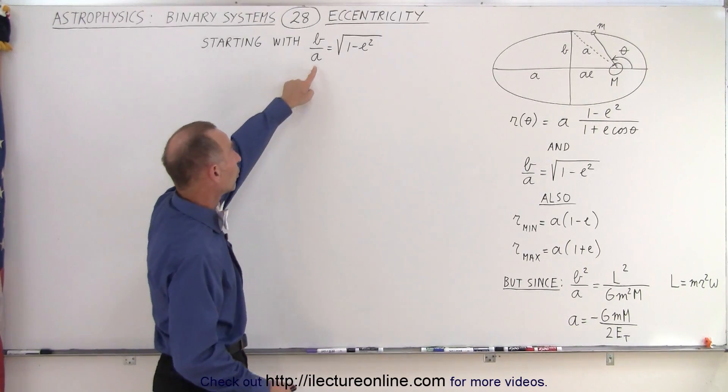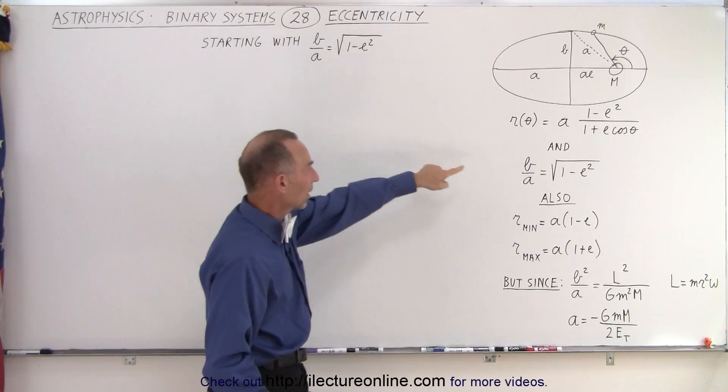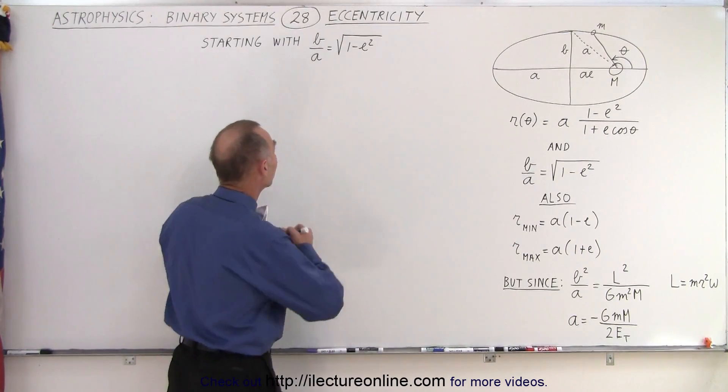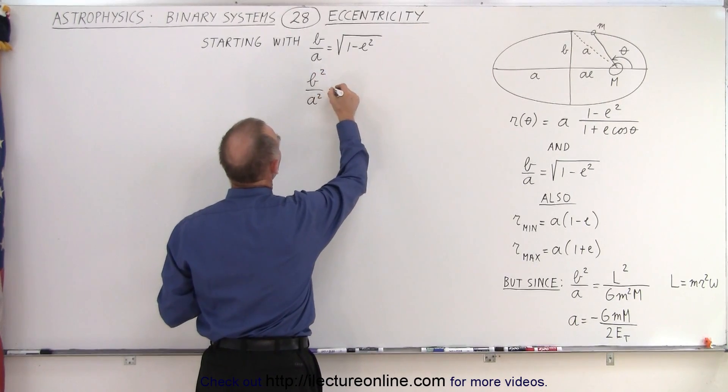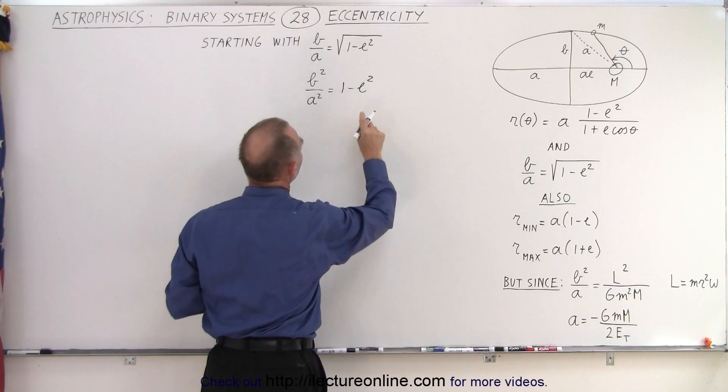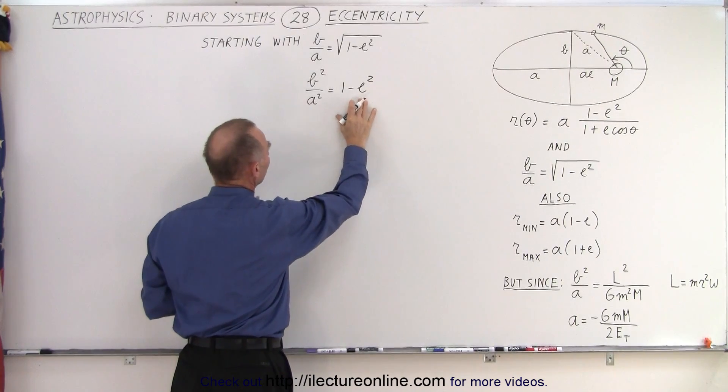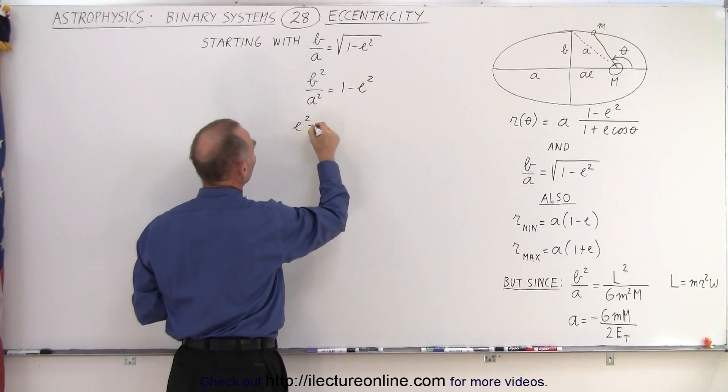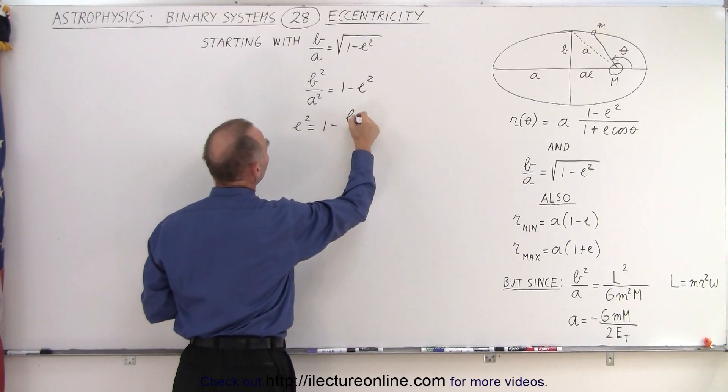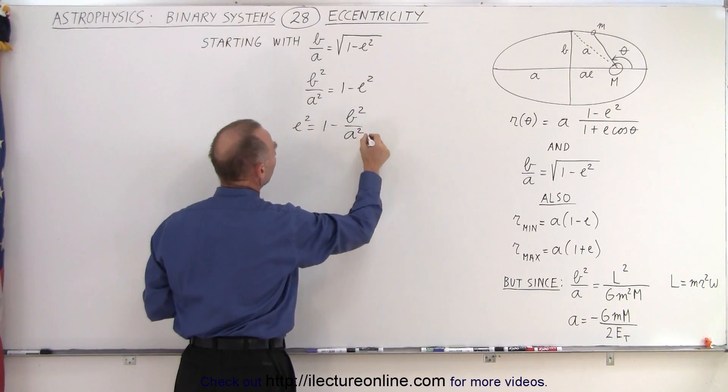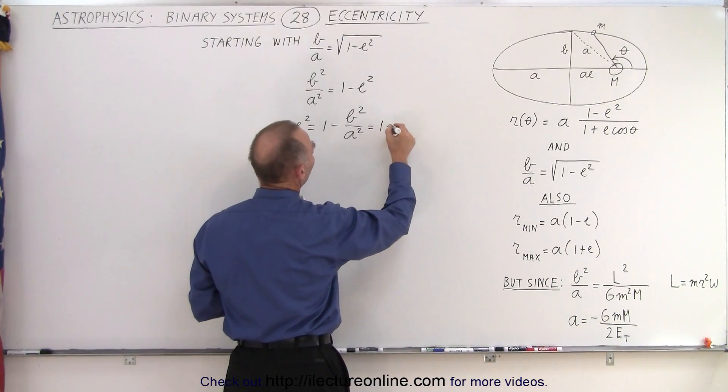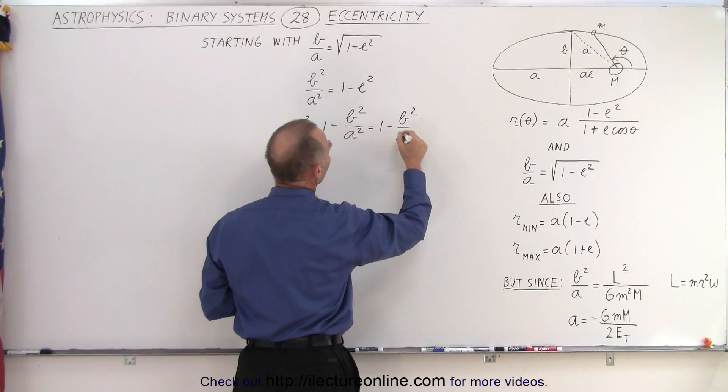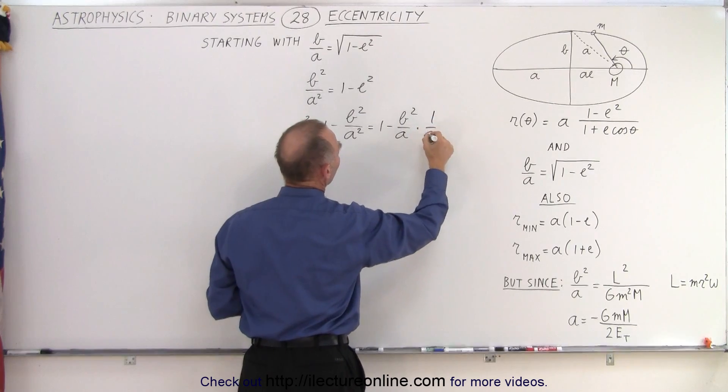We're going to start with this equation right here, which is the same as this equation right there. Now we're going to square both sides. So when we do that, we get b squared over A squared is equal to 1 minus e squared. And then we solve this for e, the eccentricity. So we have e squared is equal to 1 minus b squared over A squared. And since I have this relationship right here, we're going to write this as 1 minus b squared over A times 1 over A.